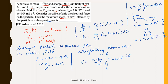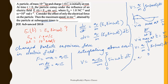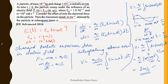Substituting the limits from 0 to pi/omega into the integral of sin(1000t) dt, and substituting the given values of q, m, and E₀, we get the final answer as 2 meters per second. This is the maximum speed attained by the charged particle in this variable electric field.